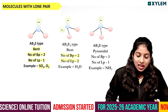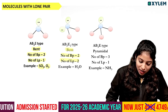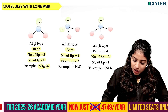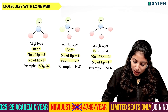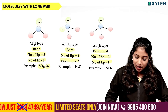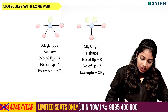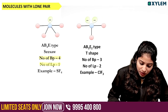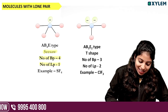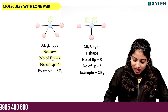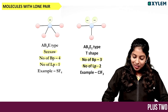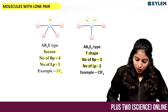With 2 bond pairs and 2 lone pairs, the shape is also bent (2-2). With 3 bond pairs and 1 lone pair (3-1), the shape is pyramidal. With 4 bond pairs and 1 lone pair (4-1), and with 3 bond pairs and 2 lone pairs (3-2), the shape is T-shaped.